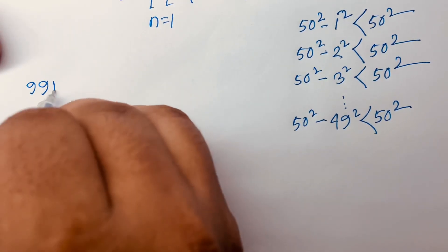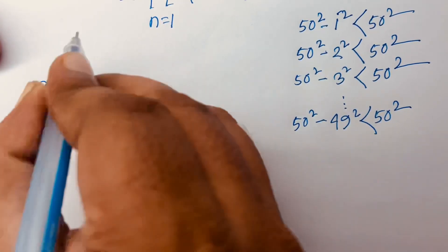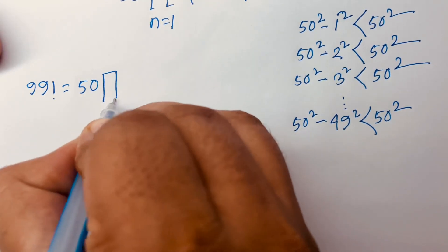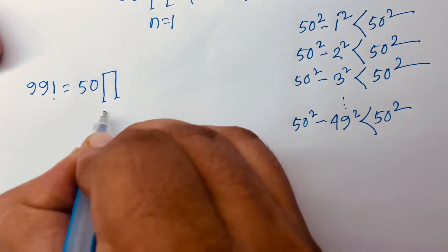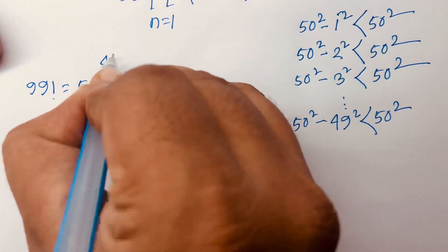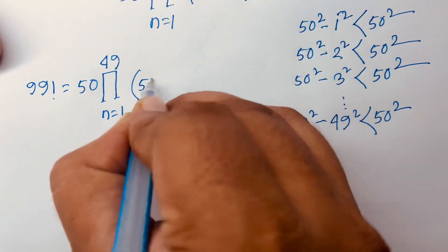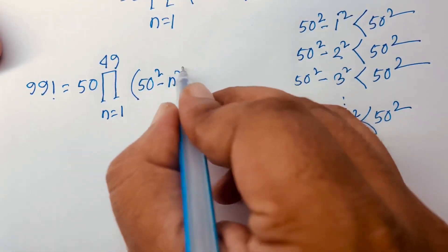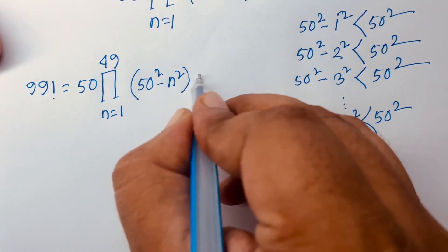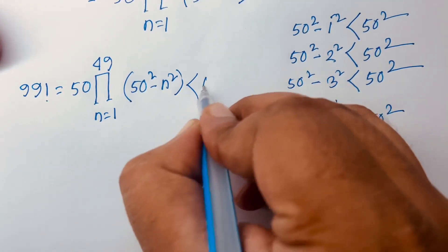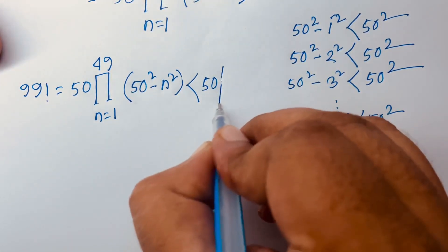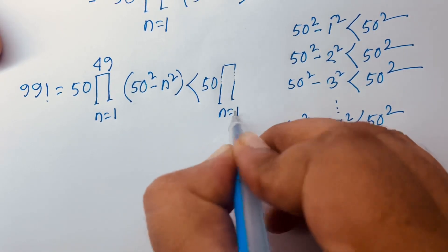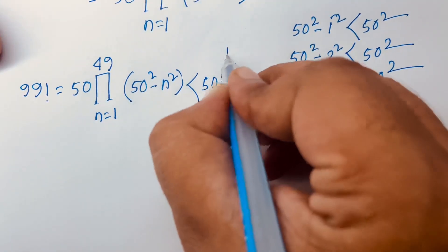So 99 factorial equals 50 times the product for n equals 1 to 49 of (50 squared minus n squared), and this is always less than 50 times the product for n equals 1 to 49 of 50 squared.